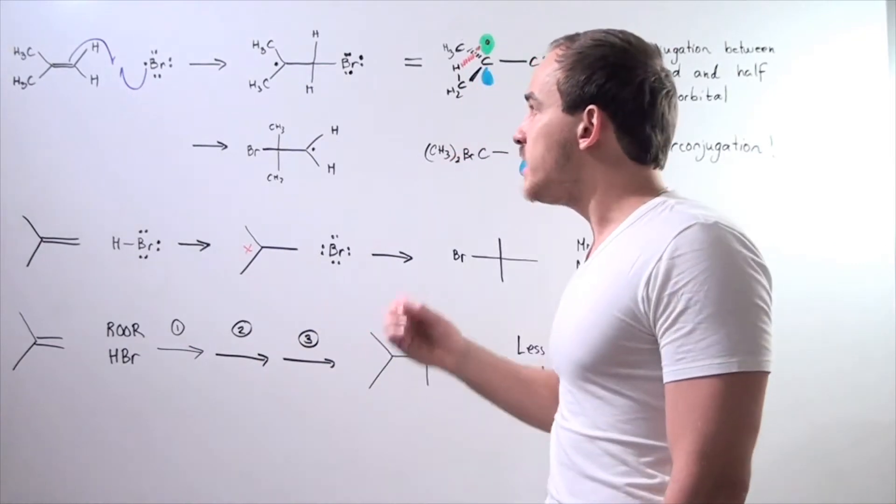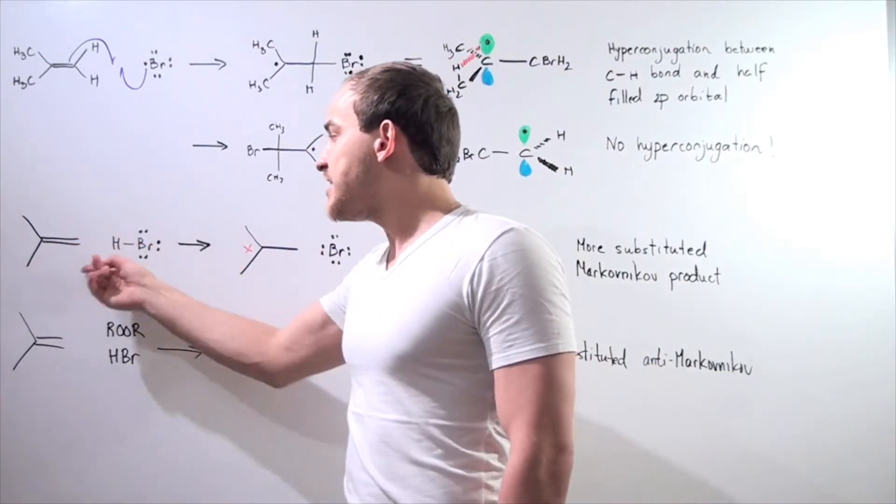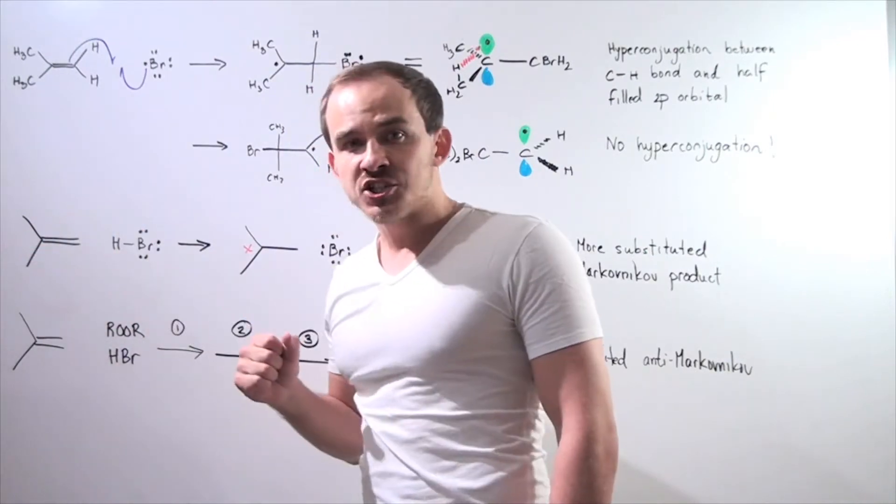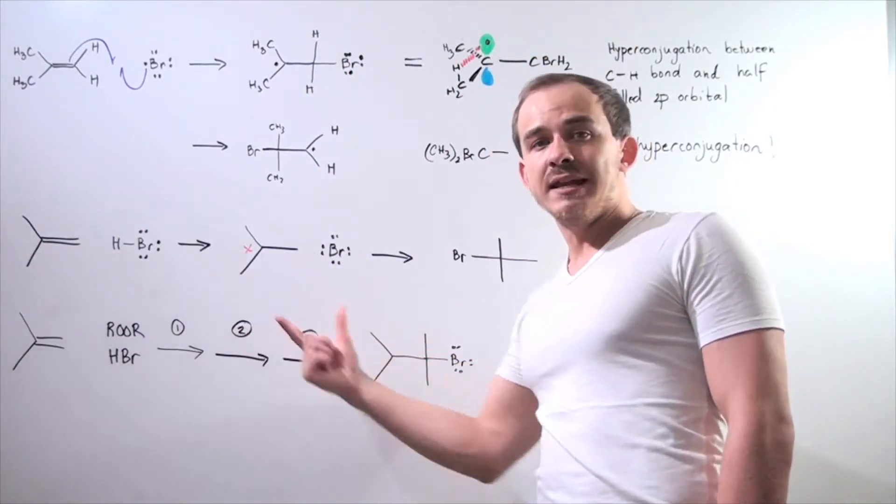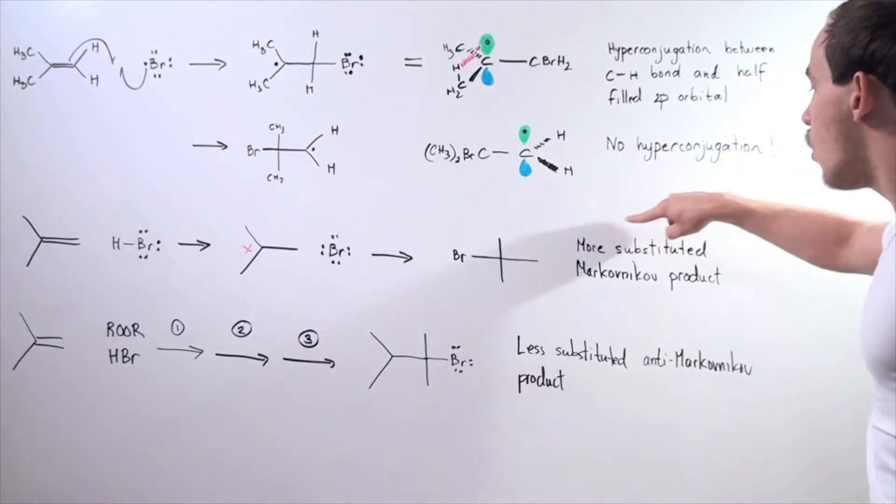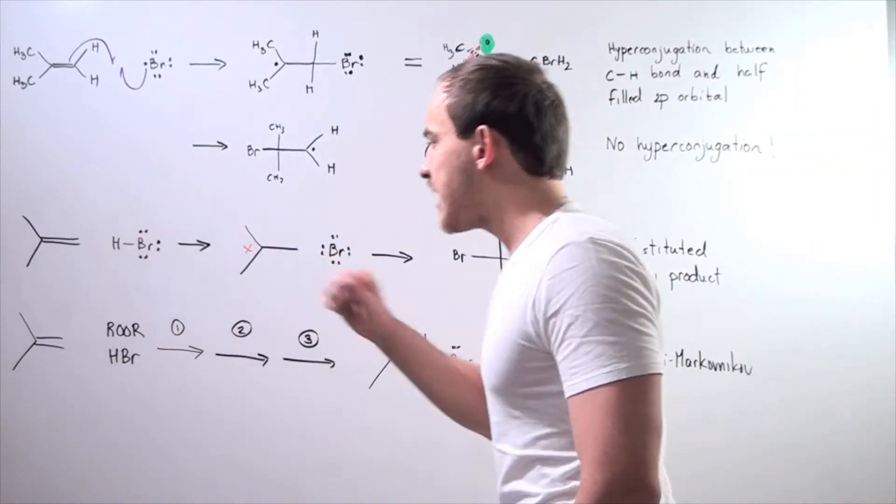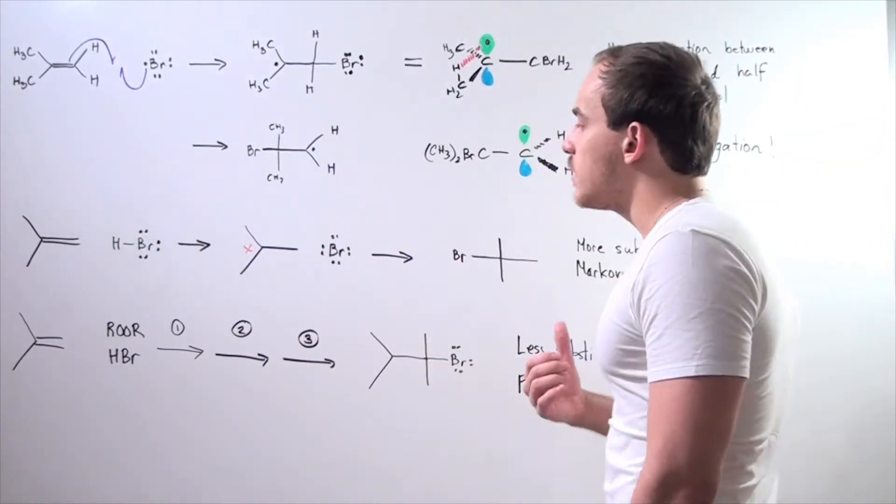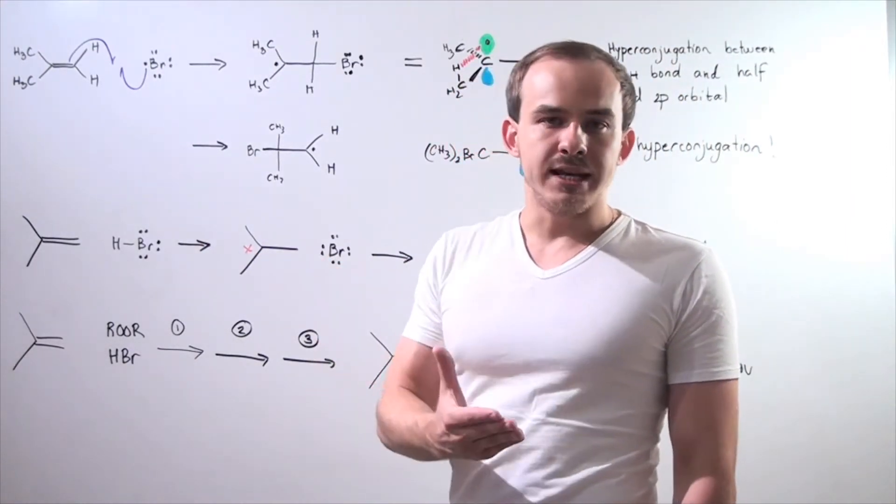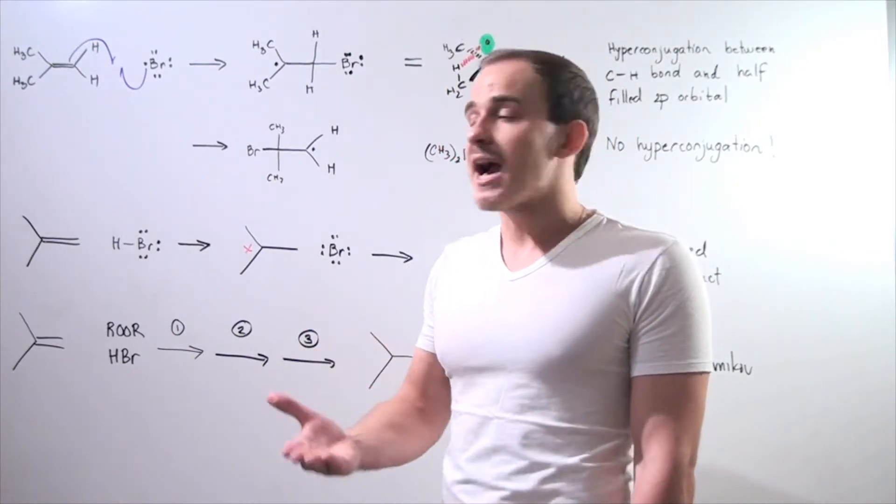In other words, if we compare this reaction to our simple, straightforward addition of HBr to this alkene, why is it that in this reaction we form the following intermediate and product, which is the more substituted Markovnikov product? Well, notice that in this reaction we form the more stable tertiary carbocation intermediate, rather than the less stable primary carbocation intermediate.